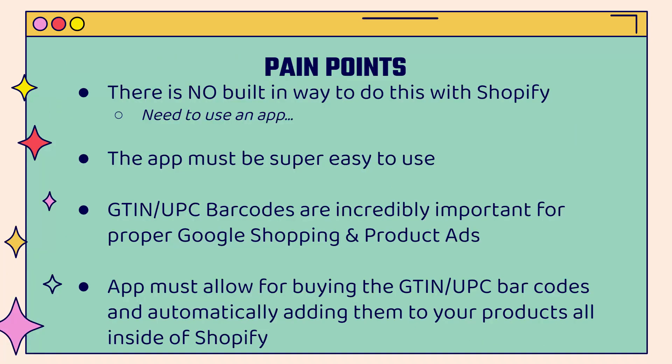There's no built-in way to do this with Shopify, so you're going to need to use an app. I'm going to show you the app that I use — it's super easy to use, super easy to set up. We'll go over the shoulder and I'll show you exactly how to use it. GTIN UPC barcodes are very important from an optimization standpoint for your product ads and Google Shopping. The most important thing about the app is that it allows you to buy these barcodes and automatically add them to your products, all inside of Shopify.